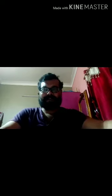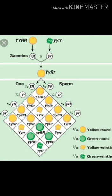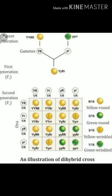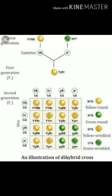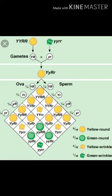The gametes formed are: YR, yr, Yr, and yR. These types of gametes will form the offspring in the F2 generation, which is shown in the Punnett square on your screen. The phenotypic ratio in the F2 generation of the dihybrid cross is: yellow round : yellow wrinkled : green round : green wrinkled = 9 : 3 : 3 : 1.